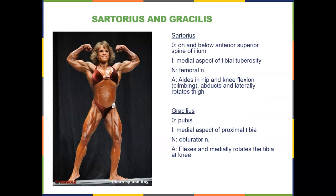The sartorius originates on and below the anterior superior iliac spine and inserts on the medial aspect of the tibial tuberosity. It's innervated by the femoral nerve and aids in hip and knee flexion, like climbing — also abducts and laterally rotates the thigh. The gracilis originates on the pubis, inserts on the medial aspect of the proximal tibia near the tibial tuberosity, is innervated by the obturator nerve, and flexes and medially rotates the tibia at the knee.